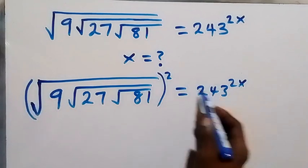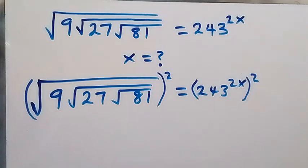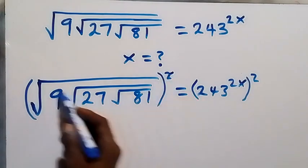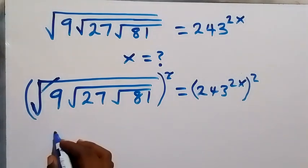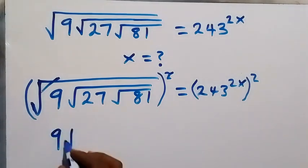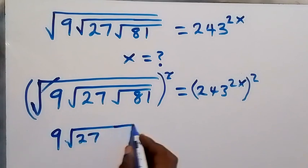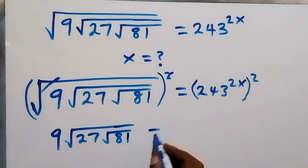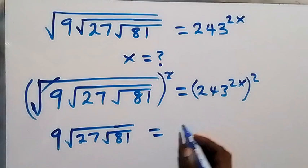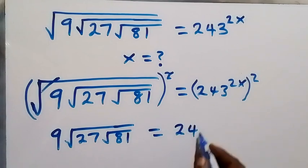We square this side and also square this side, such that this square will cancel one of the square roots. Then we are left with 9, then square root of 27, and also inside that the square root of 81, which equals — this power multiplies by the law of indices — and this gives us 243 raised to power 4x.